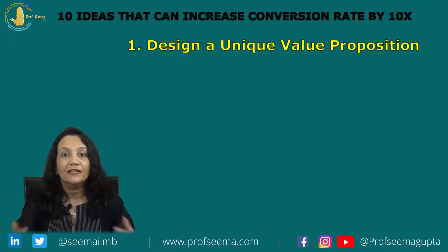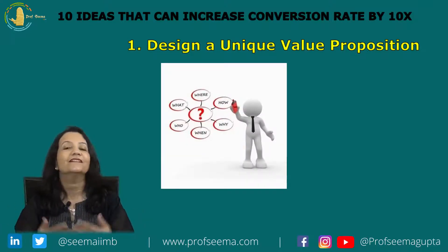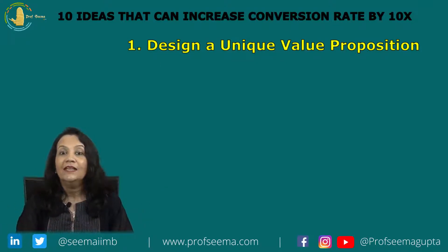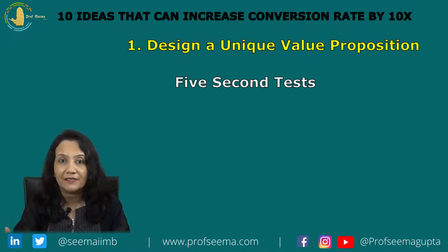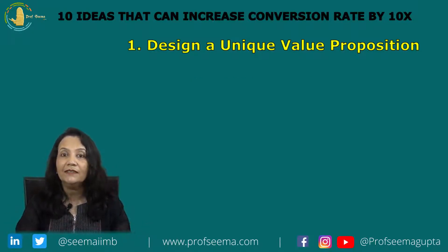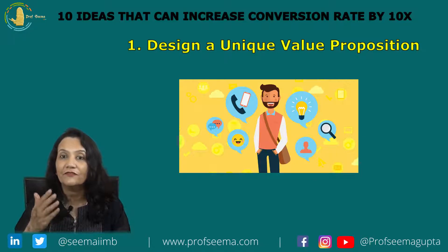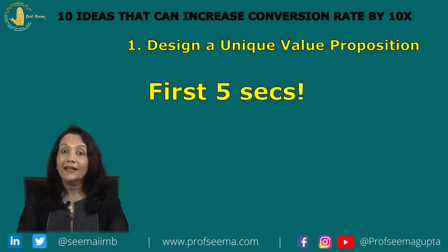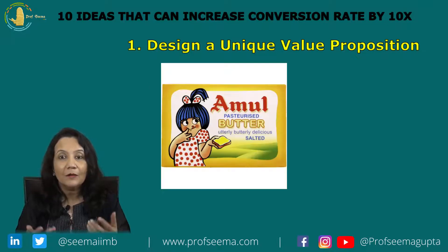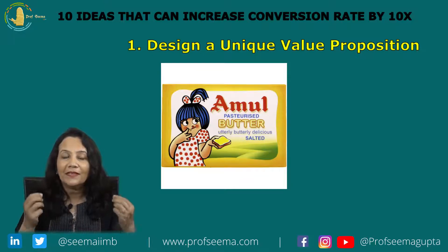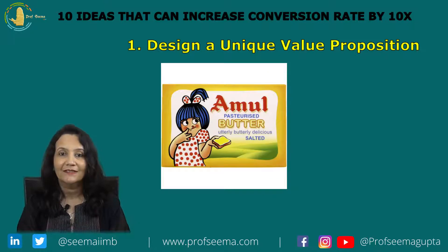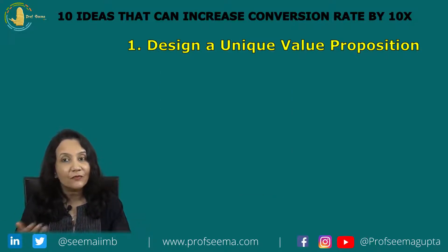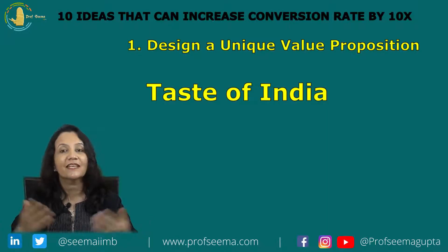Do what your customer needs, do what you are best at, and do what your competitors can't do. An important tool you can use to determine your USP is the 5 second test, which helps determine the first impression after seeing the first 5 seconds of your landing page. An interesting example is Amul — their value proposition is 'utterly butterly delicious,' and they are also positioned as the taste of India.